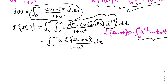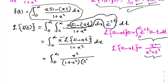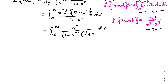We know the Laplace transform of sine of xt is equal to x over x squared plus s squared. Applying this, we get the integral from zero to infinity of x squared over one plus x squared times s squared plus x squared dx.